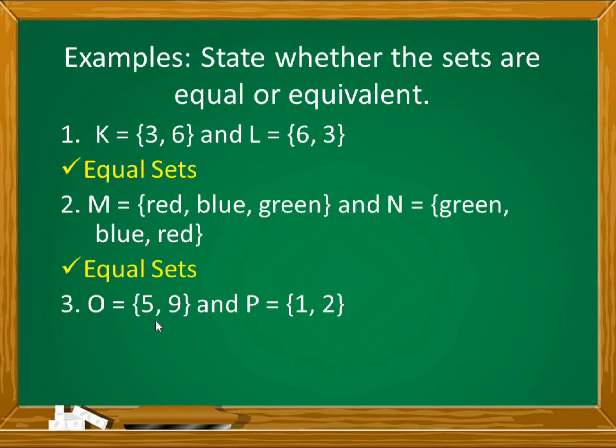Number 3, set O has elements 5 and 9, and set P contains elements 1 and 2. As you can see, pareho yung bilang ng kanilang elements. Pero, magkaiba ang mga elements nilang taglay. Sets O and P are equivalent sets.